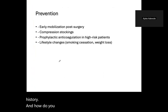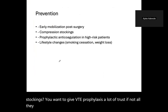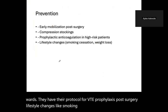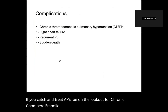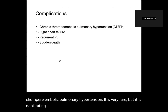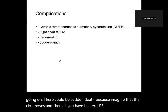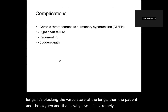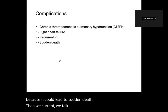Prevention: early mobilization post-op, compression stockings, VTE prophylaxis — most trusts have protocols, especially in orthopedics and surgical wards — and lifestyle changes like smoking cessation and weight loss. If you catch and treat a PE, be on the lookout for complications: chronic thromboembolic pulmonary hypertension, which is rare but debilitating; recurrent PE; and sudden death, which can occur if a clot moves or bilateral PE blocks the pulmonary vasculature. Do ABGs to monitor blood gases.